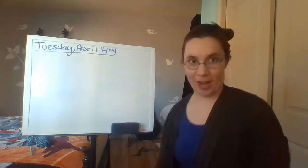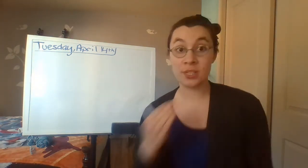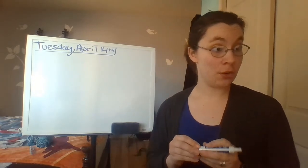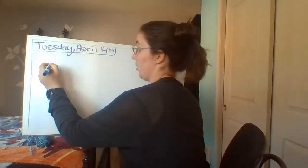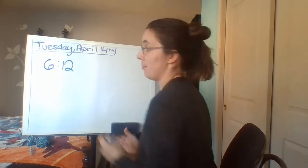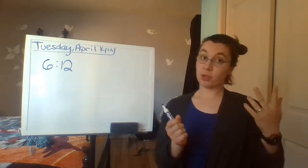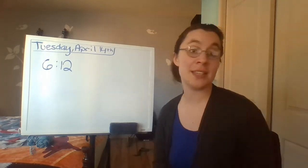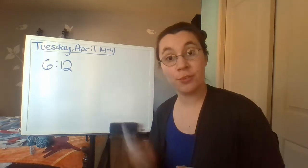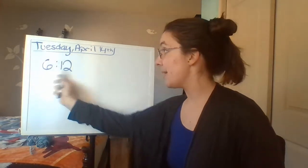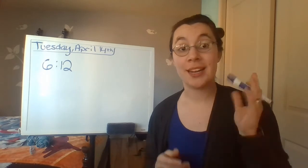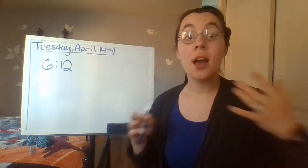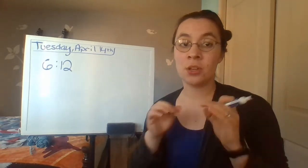Ratios are a lot like fractions in that you can reduce them — you can simplify them, write them in simplest terms. If you have the ratio six to twelve, maybe for every six fiction books you have twelve non-fiction books, or maybe you have six stuffed cats and twelve stuffed guinea pigs. If your ratio of stuffed cats to stuffed guinea pigs is six to twelve, six refers to cats and twelve refers to guinea pigs, and you can reduce that to get a simplified ratio.